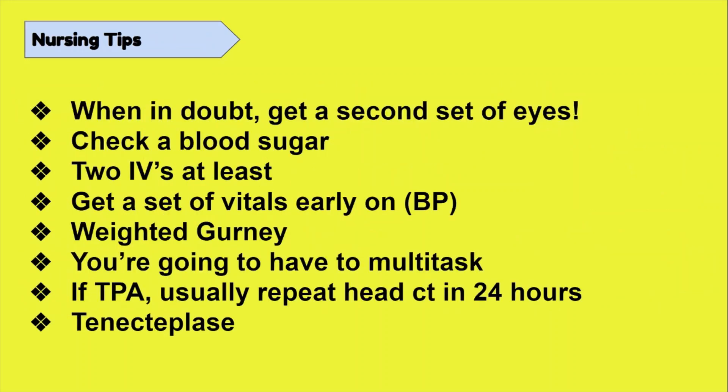Now for some specific nursing tips. Safety is the most important thing, so if you are ever unsure, get a second pair of eyes. If you think it's a stroke but aren't quite positive, ask someone to come do their own assessment. Never forget to get a blood sugar for code strokes. If you're going to give TPA, get two IVs beforehand because you don't want to be poking the patient after the fact. TPA is weight-based, so it's crucial to get an accurate weight — it's really helpful to have a weighted gurney strictly for code strokes.